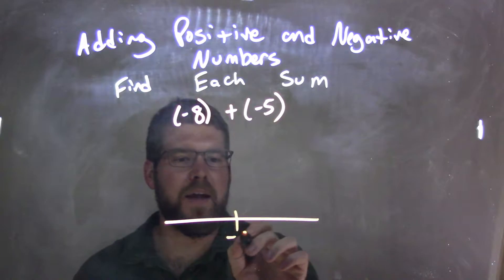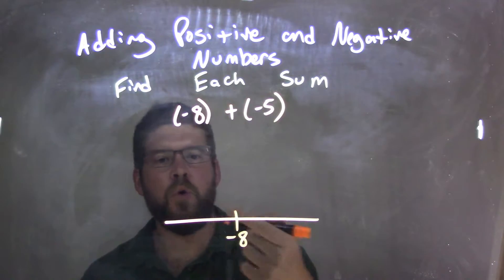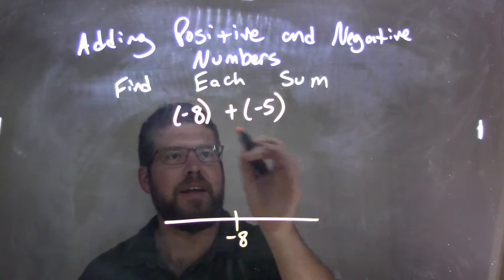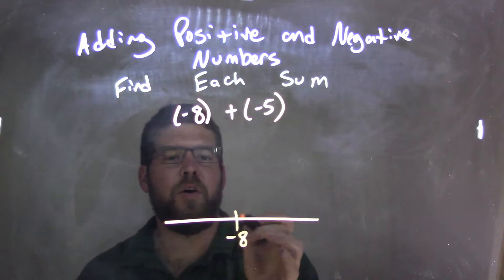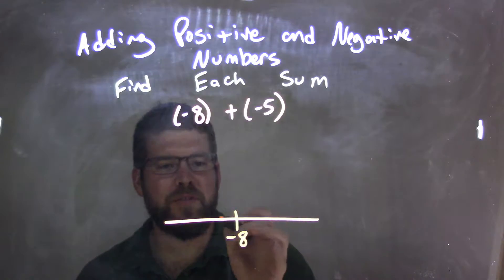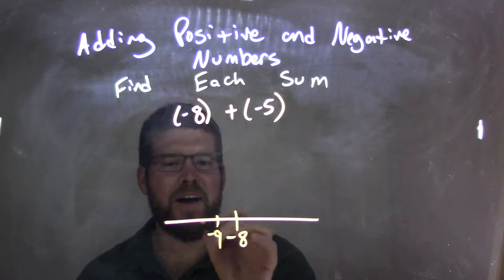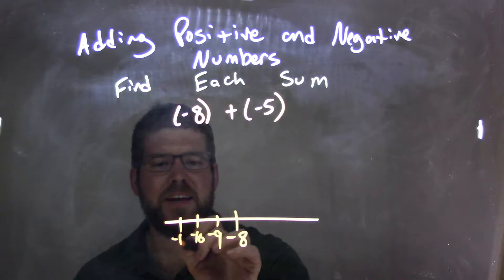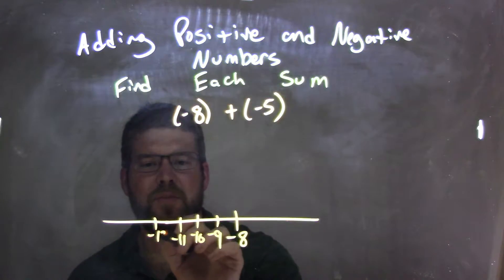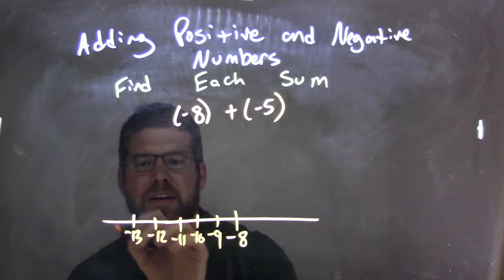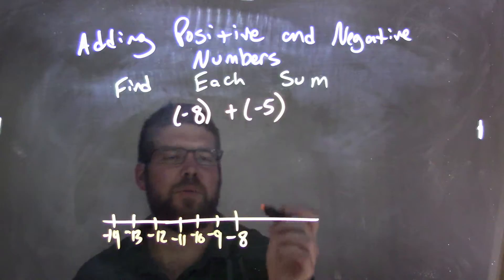I start with negative 8, and I need to move to the left negative 5 units. So in the direction of negative 5 units, we have negative 9, negative 10, negative 11, negative 12, negative 13, negative 14. Okay, that should be helpful.